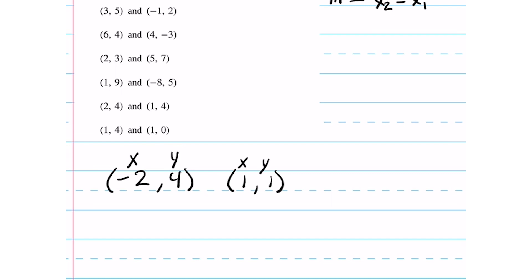After labeling the x and y, you also want to label them according to the point, so that we know which is x2 and which is x1. Now that we have all the parts of our points labeled, we can plug them into our slope equation.